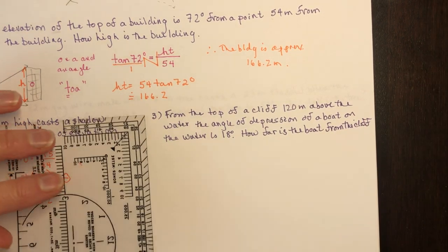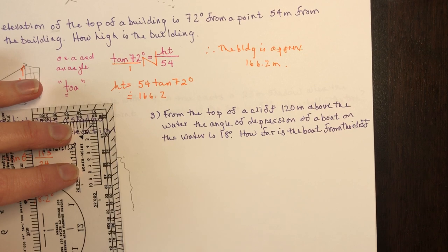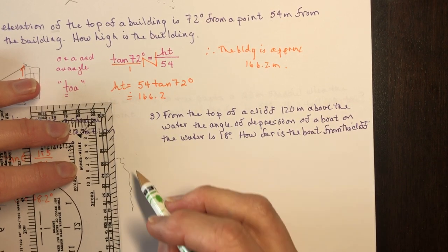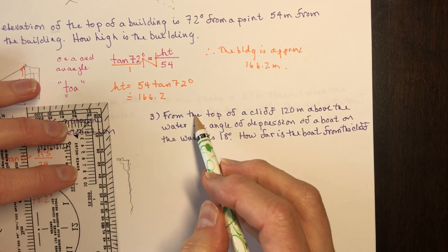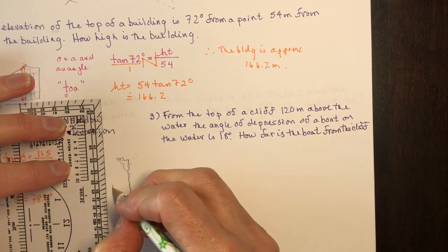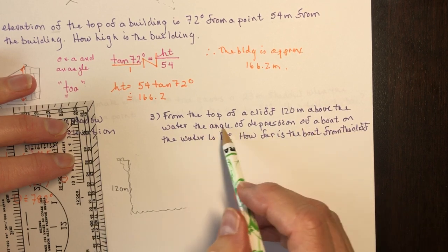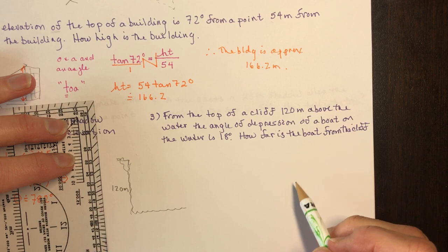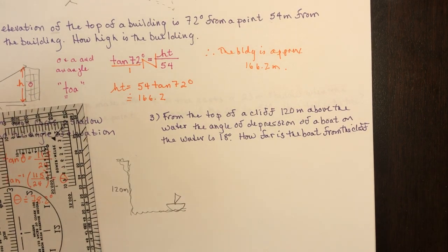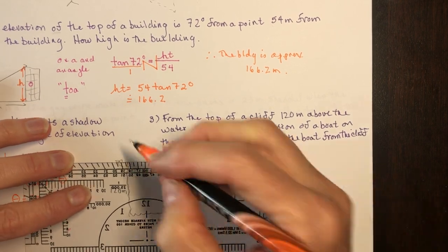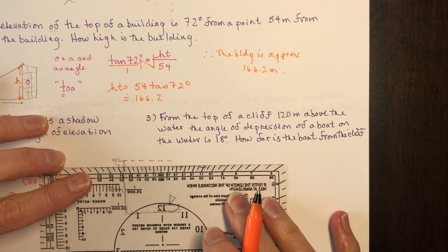Problem three: from the top of a cliff 120 meters above the water, the angle of depression of a boat on the water is 18 degrees. How far away is the boat from the cliff? Draw a cliff — everything is assumed perpendicular to the ground. The cliff is 120 meters, the water is below, and the boat is out on the water. The sight line goes straight across parallel to the water, and the angle of depression below it is 18 degrees.